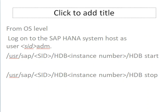For stopping the system, go to the path /usr/sap/<SID>/HDB<instance-number> and execute the command hdb stop.